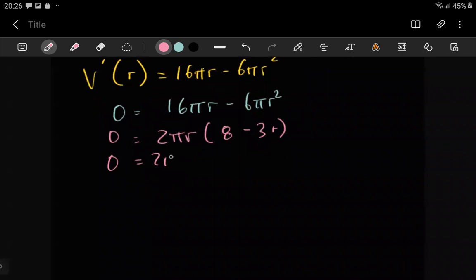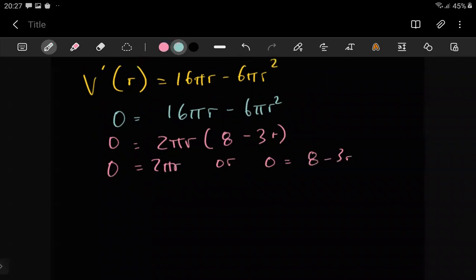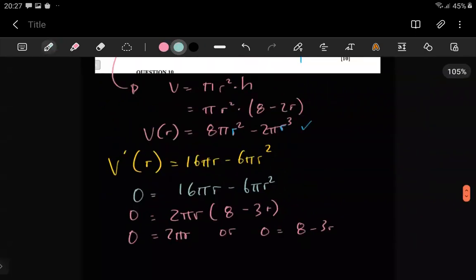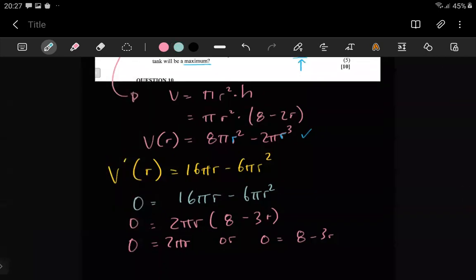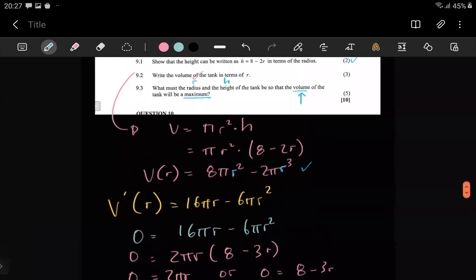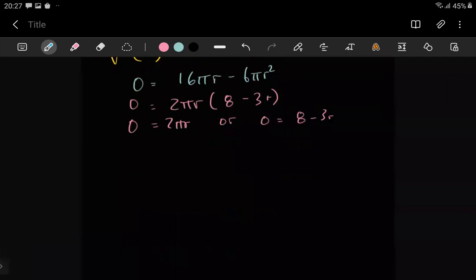Therefore zero equals 2πr or zero equals 8 minus 3r. The reason you're getting two different answers is because this question could have asked maximum or minimum, it doesn't matter. One of your answers is going to result in the maximum volume, the other one in the minimum volume.